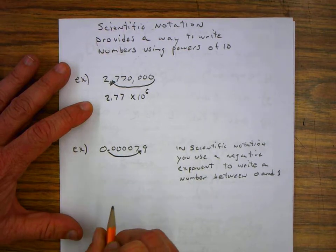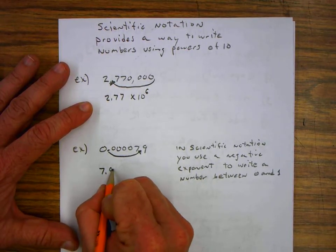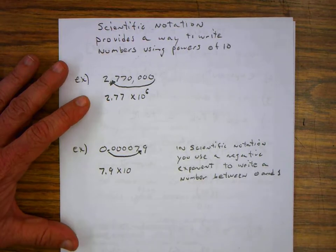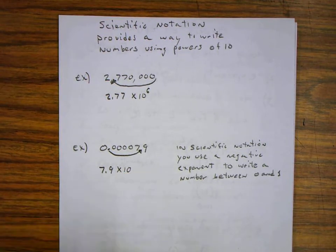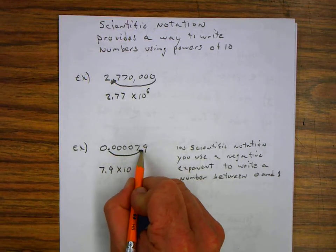And just like before we're going to write it without the 0's. So we're going to write 7.9 times 10. And then we've got to determine what our exponent's going to be. So we moved it 1, 2, 3, 4, 5 places.